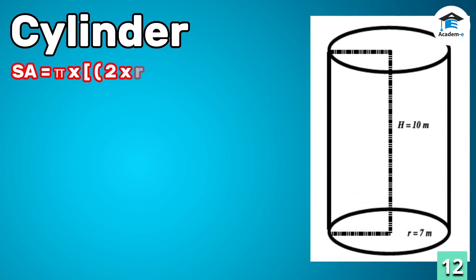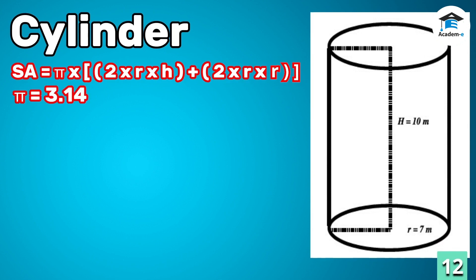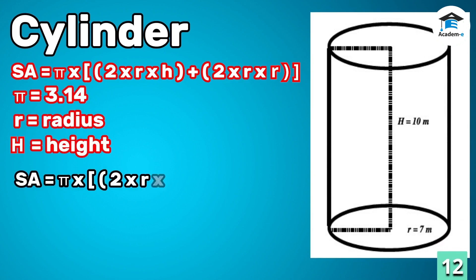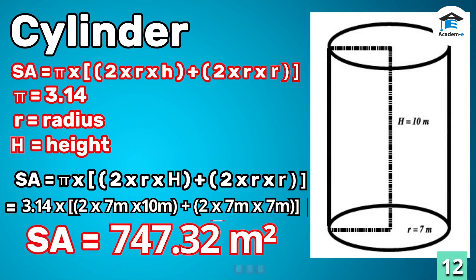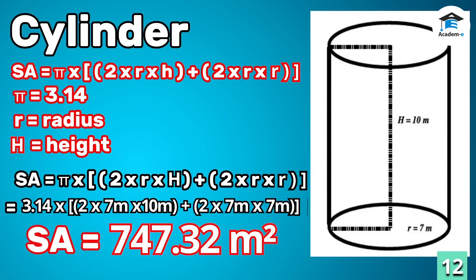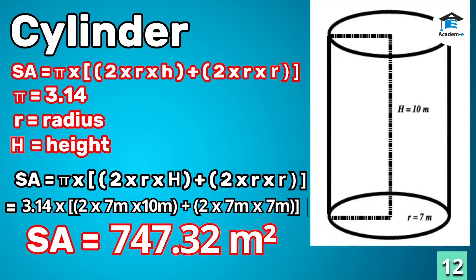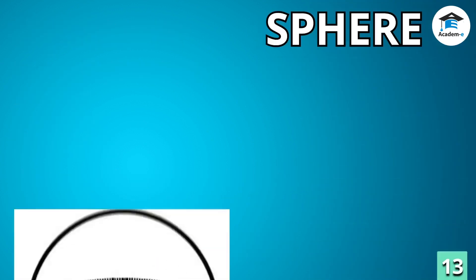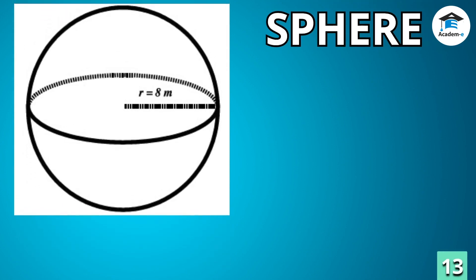Cylinder: to get the surface area of a cylinder, multiply 3.14 by the sum of the product of 2 times radius times height and 2 times radius squared. Therefore, the surface area of the cylinder is 747.32 square meters.